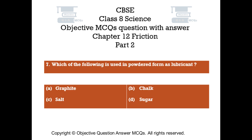Question number 7: Which of the following is used in powdered form as a lubricant? Option A: Graphite. Option B: Chalk. Option C: Salt. Option D: Sugar.